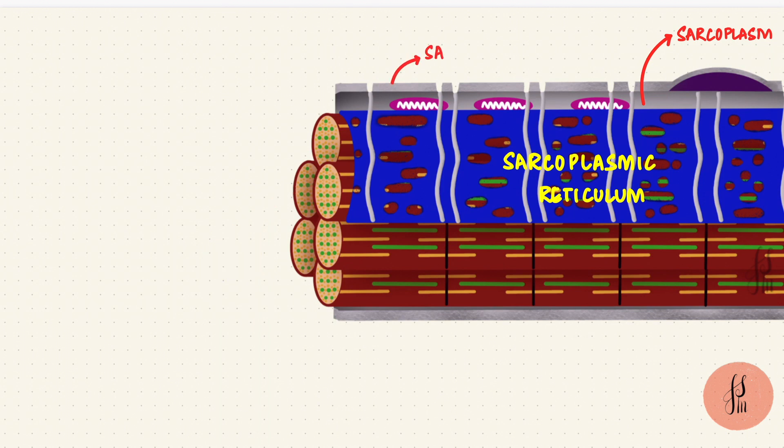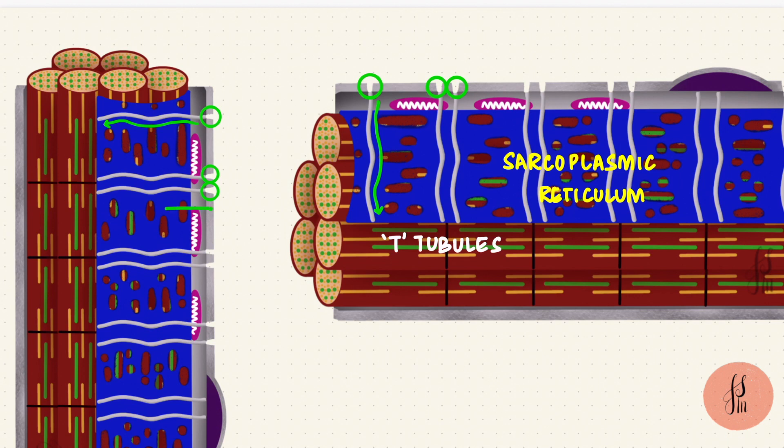The cell membrane of the muscle cell is called the sarcolemma, and at different points this membrane dips down into the cell. In mammalian cells, this happens at the junction of the A and the I bands, so that's twice for every sarcomere. These are called T-tubules or transverse tubules because they are transverse with respect to the myofibrils.